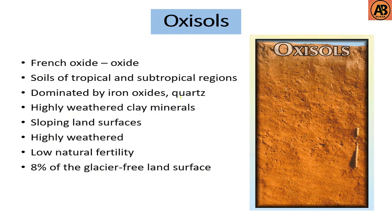Next are Oxisols. Oxisols come from the French word oxide, meaning oxide. They are soils of tropical and subtropical regions dominated by iron oxides, quartz, and highly weathered clay minerals such as kaolinite. They are found on sloping land surfaces and are highly weathered. They have low natural fertility and occupy 8% of the glacier-free land surface.